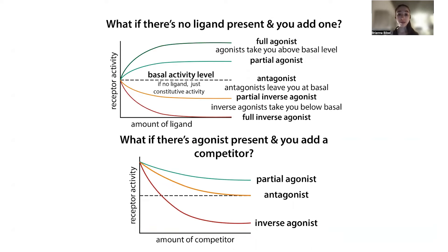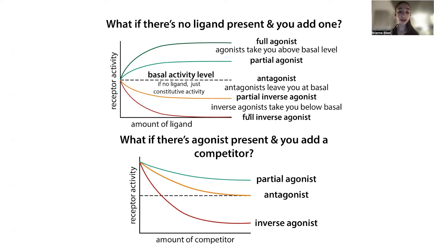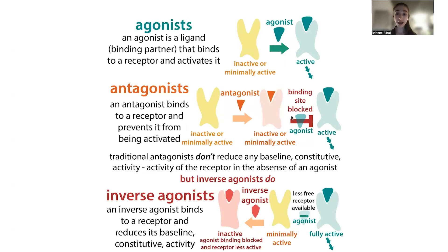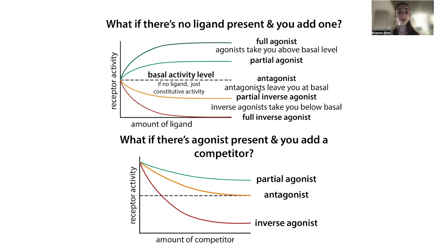If you have the agonist present, however, an antagonist is able to decrease the activity — not below basal, but below the agonist-activated level. The activated level is above baseline, and the antagonist prevents the agonist from binding. So the more antagonist you add, the more you compete out the agonist, and you can bring activity back down to baseline.